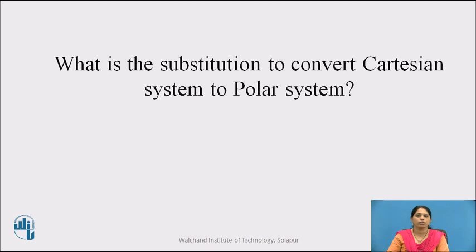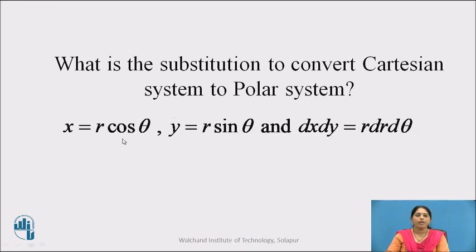Before going to see the procedure, please pause the video for a minute and give the answer to this question: What is the substitution to convert the Cartesian system to the polar system? I hope you all have written the solution. Let us check the solution. We put x equals to R cos θ, y equals to R sin θ, and dx dy equals to R dr dθ to convert the given Cartesian system to the polar system.